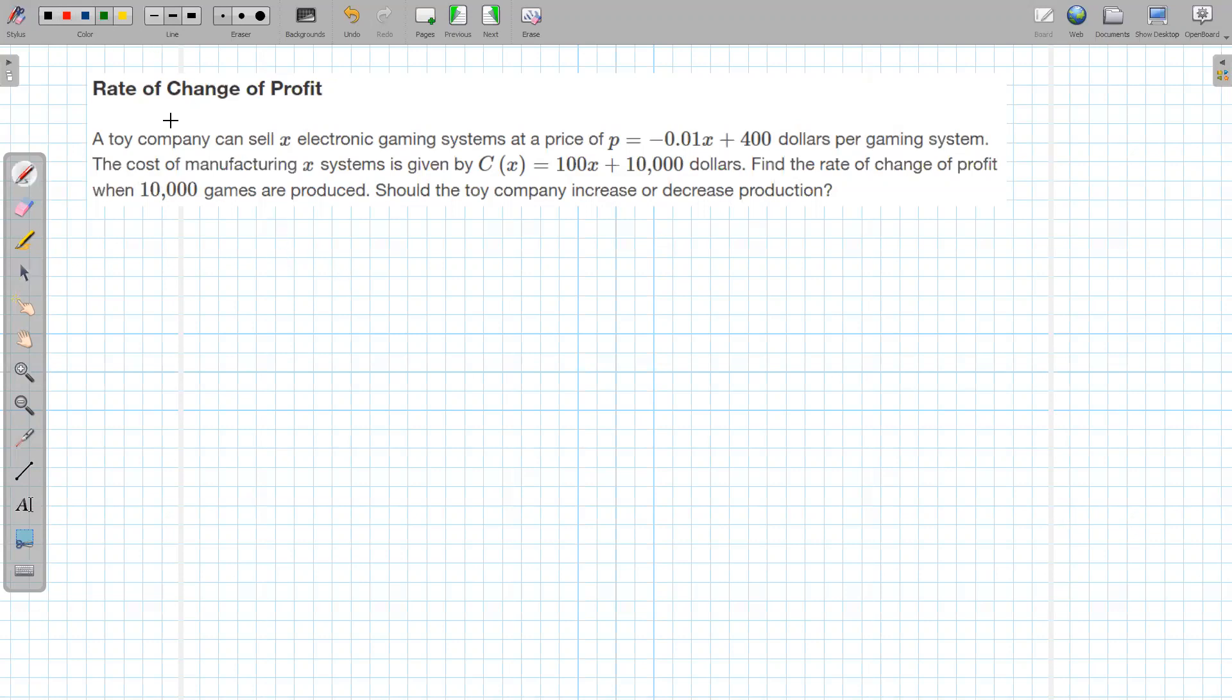All right, let's take a peek. So first we have to deal with finding profit, but to get profit we need revenue. So profit is revenue minus cost.